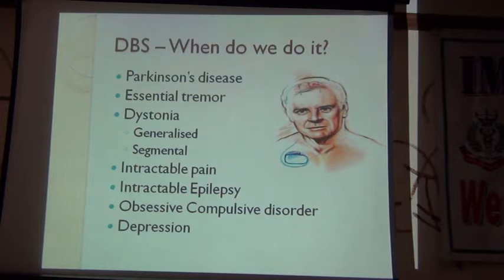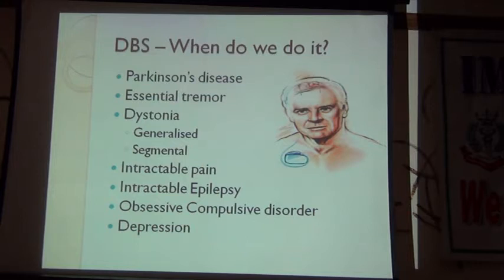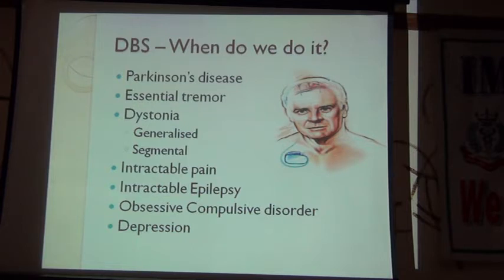Which patients can we consider for deep brain stimulation? One is Parkinson's disease. Do all patients with Parkinson's disease benefit from DBS? No. We should first make sure it is idiopathic Parkinson's disease and not any of the Parkinson's-plus syndromes. The patient should by definition have improved with Dopa, because DBS will limit the Dopa but improve dyskinesias. It is typically a patient who has had Parkinson's disease for at least 4–5 years, who has started developing on-off phenomenon, wearing off, dyskinesias, or is unable to tolerate the Dopa.